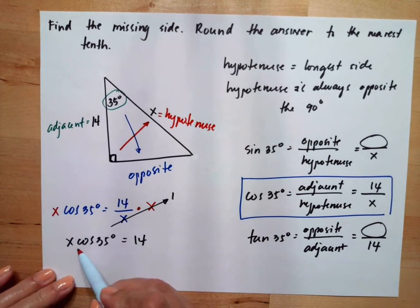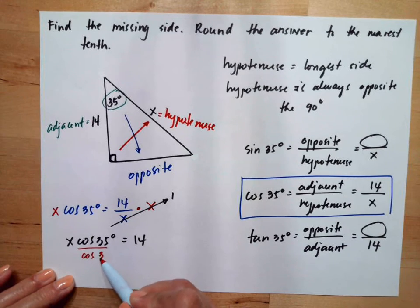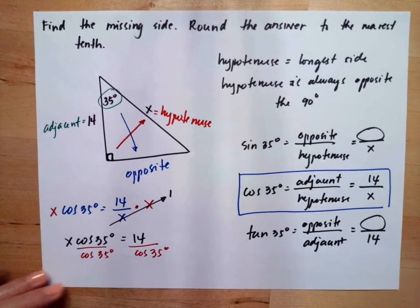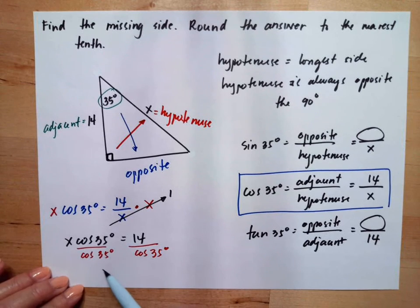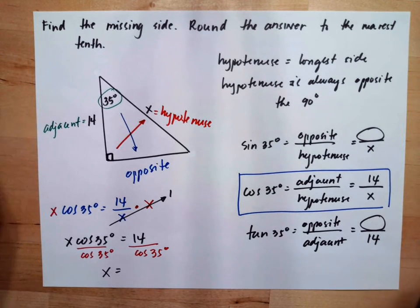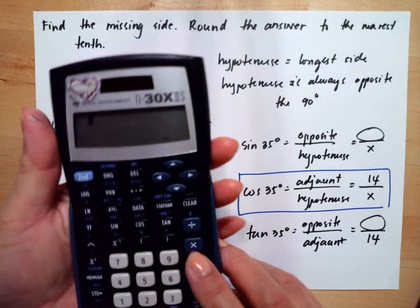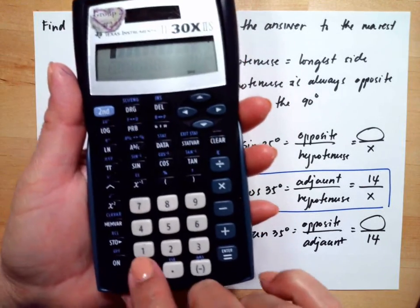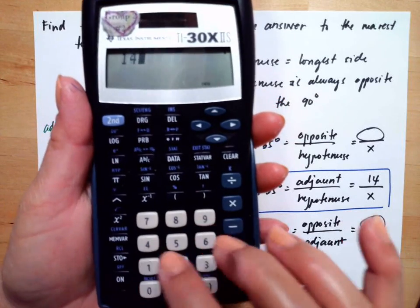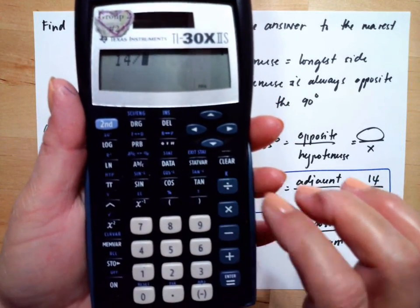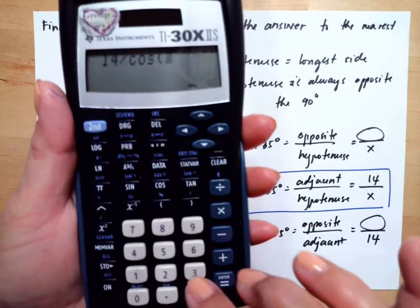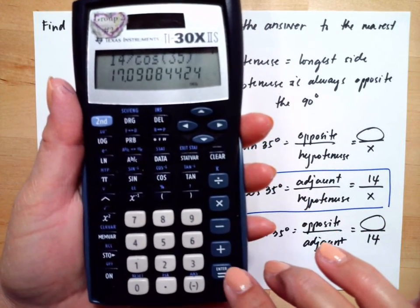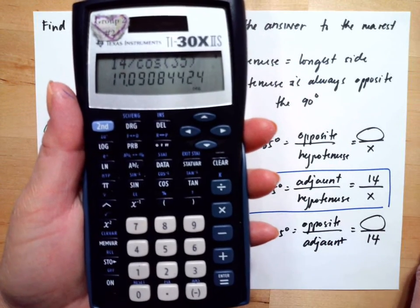So we will divide both sides by cosine 35. And using our calculator, we will do 14 divided by cosine 35. And we get 17.09.